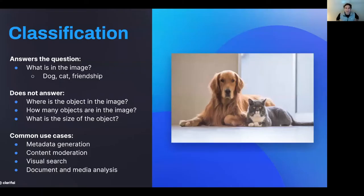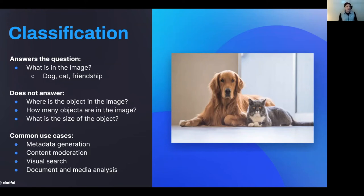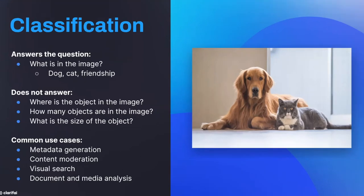Let me give you a bird's eye view of what classification is. On the right you see an image, and what classification does is tell you what is in this image. For example, here you see a dog, a cat, and you may even see things that are not so physical, like friendship. You can build AI models that classify the content of an input into things like the probability that there's a dog, a cat, or friendship. It doesn't answer the question of where in the image a particular object is, how many objects there are, or what the size of each individual object is.